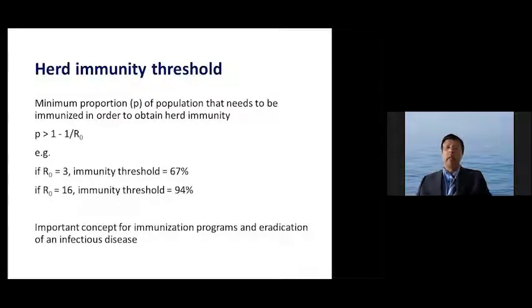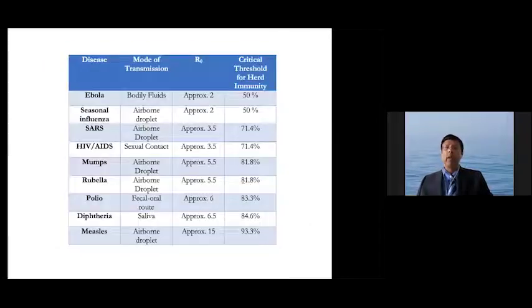If R0 is 16, the immunity threshold becomes 94%. So you can see from this, if the R0 is low, a lower number of people have to be immune to get the herd immunity threshold reached. This is shown in this figure.